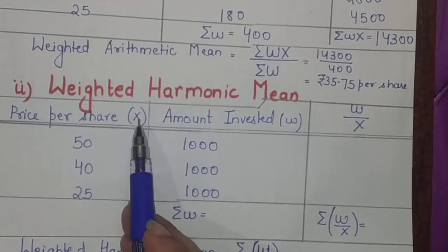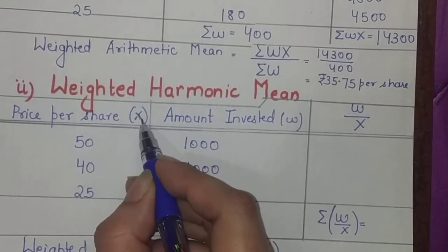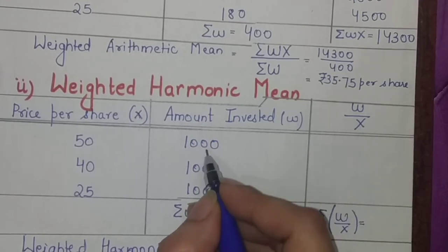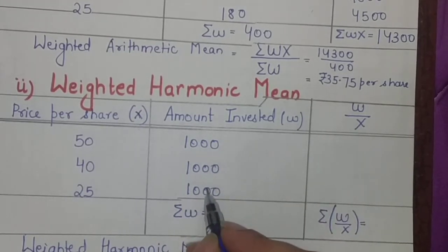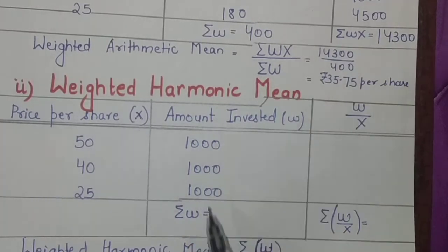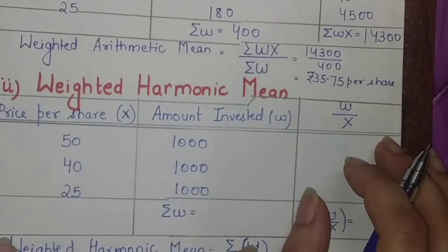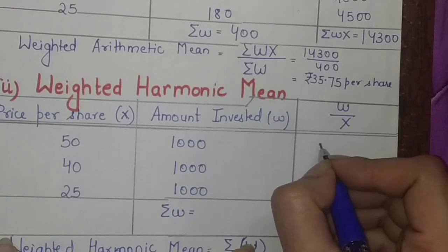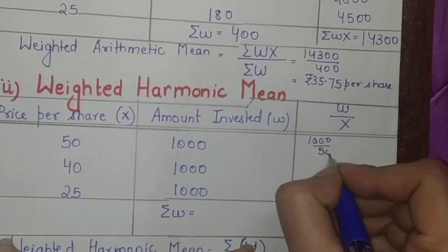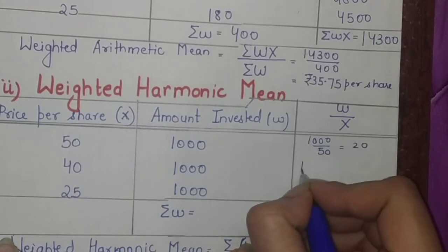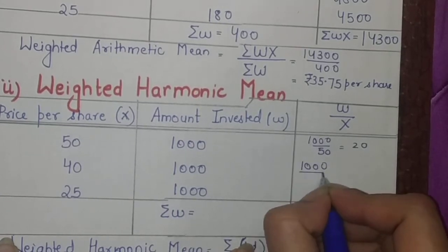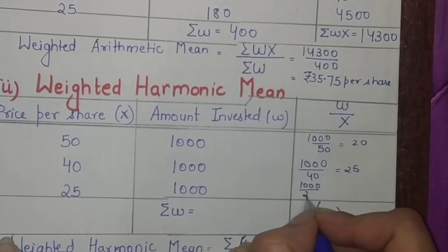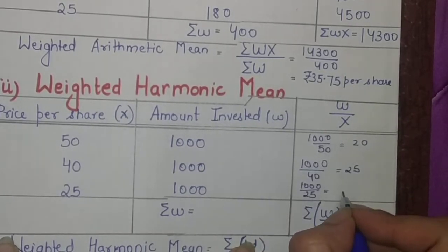He bought 1000 rupees of shares on the first day, 1000 on the second day, and 1000 on the third day. You need to calculate W by X, which is 1000 by 50 equal to 20, then 1000 by 40 equal to 25, then 1000 by 25 equal to 40.